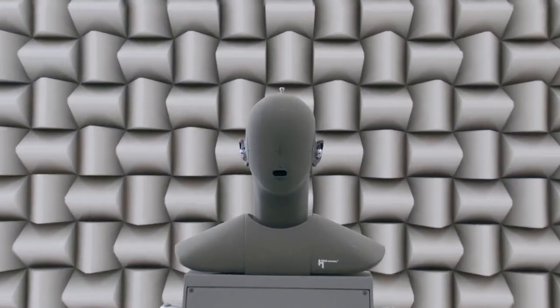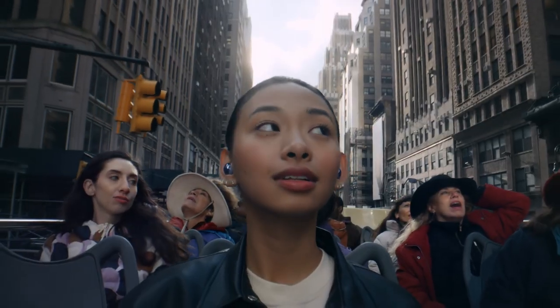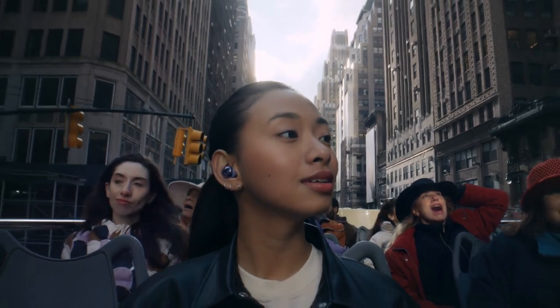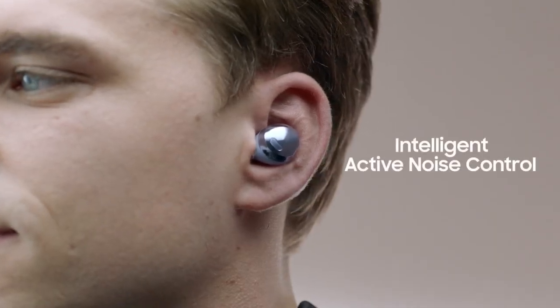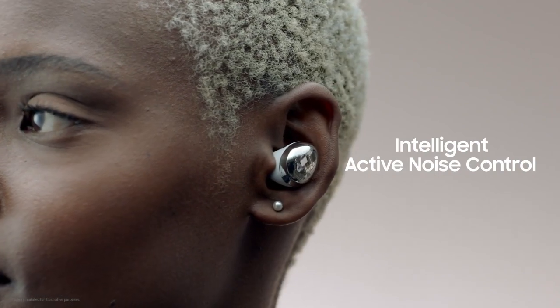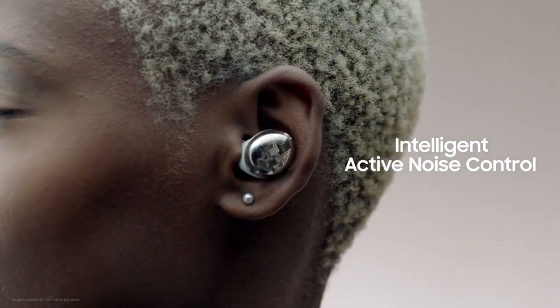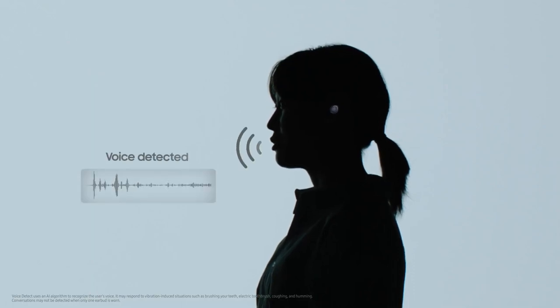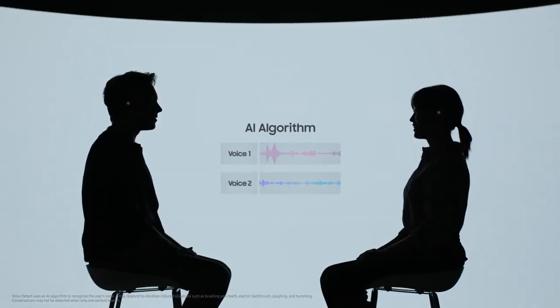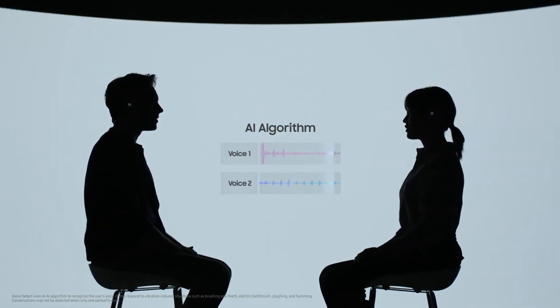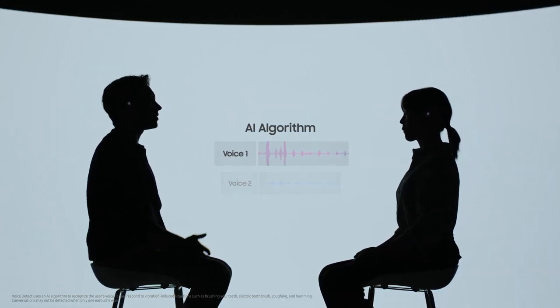But as much as we love being immersed in our own worlds, we need to be able to connect with the world around us. Enter Intelligent Active Noise Control. With Intelligent ANC, as soon as you start to speak, a microphone detects your voice while a sensor detects vibrations. An advanced AI algorithm then ensures your voice isn't mistaken for other voices to confirm you're in a conversation.